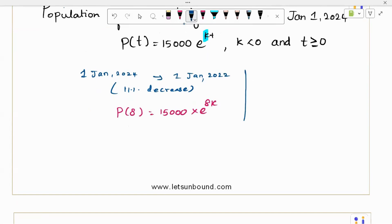So P of 8 is 11% decrease on P of 0, initial population. So we can apply that. So I need P of 0. So what is P of 0? The initial population is 15,000.